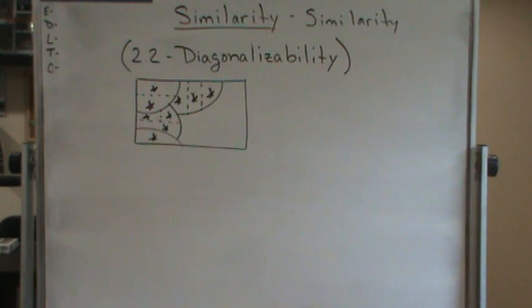For instance, the non-singular 2x2 matrices form one matrix equivalent class, but more than one similarity class.